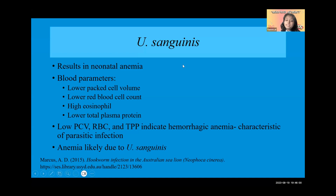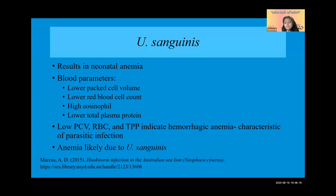It results in a low packed cell volume (PCV), a lower red blood cell count, a higher eosinophil response, and lower total plasma protein (TPP). Lower PCV, RBC, and TPP indicate hemorrhagic anemia, which are characteristic of a parasitic infection — directly linking U. sanguinis to the neonatal anemia. This strongly indicates that pup mortality is linked to U. sanguinis, because the anemia it causes is quite severe.